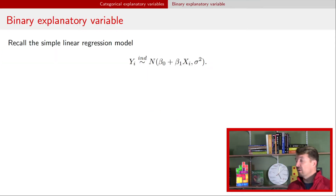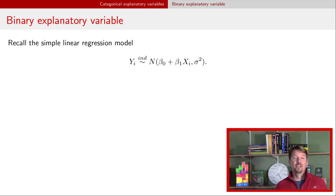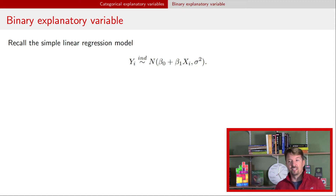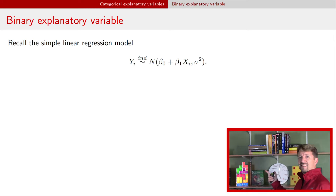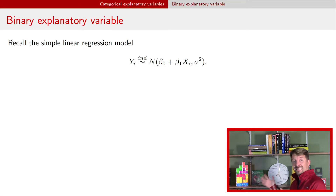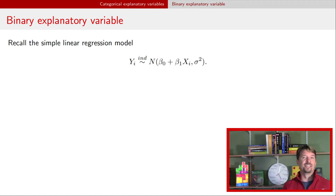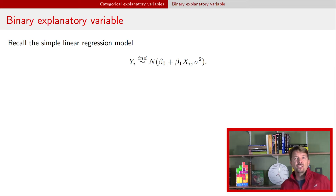So just as a reminder, our regression model can be written like this: we have a response variable y that's independently normally distributed with a mean that's beta naught plus beta one times an explanatory variable x_i, and a constant variance sigma squared. And so now the question is how do we work with this when x_i is not even a number? In our previous videos we were talking about having x_i be continuous, and we could look at scatter plots of the response versus the explanatory variable, but now we're considering situations where x is actually a categorical variable.